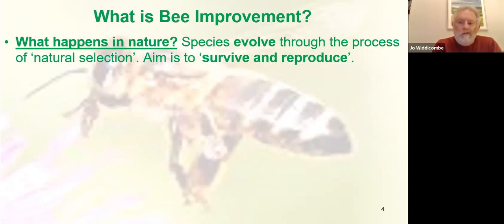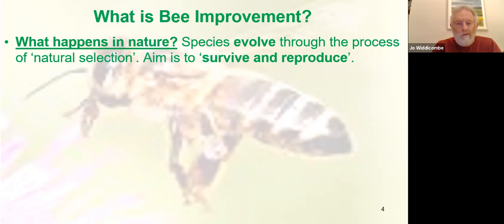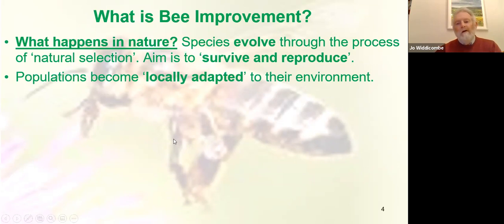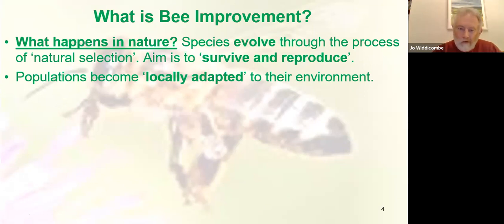Species evolve through the process of natural selection, and this has been going on for millions of years, even in the honeybee. The aim of any species in nature is just to survive and reproduce so that the species keeps going — everything is geared up for survival and reproduction, and without those the species disappears. Over time, populations become locally adapted to their environment through natural selection. The most successful ones survive and reproduce, and any that struggle disappear.